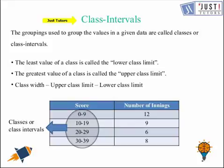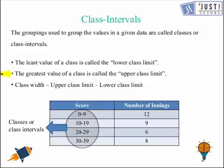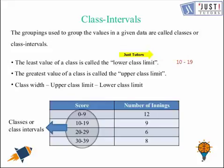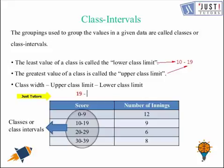Now let's look at what a class interval is. The groupings used to group values in a given data are called classes or class intervals. The least value of the class is called the lower class limit, and the greater value is called the upper class limit. For example, for the class 10 to 19, 10 is the lower class limit and 19 is the upper class limit. The class width is upper class limit minus lower class limit — so 19 minus 10 equals 9. You can see the class width remains the same for all the classes, and these are the corresponding given frequencies.